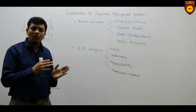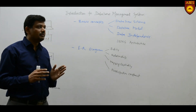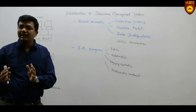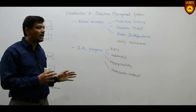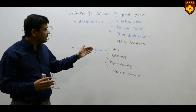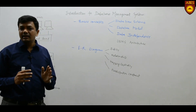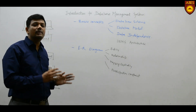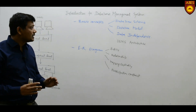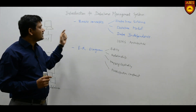After knowing these concepts, you will be able to understand how the basic design process of the database system works. Subsequently, we will discuss how we can create an ER diagram — that is, an entity relationship diagram — and the various concepts used: entity relationship mapping, cardinality, and participation constraints, which are the basic constraints used in construction of the ER diagram.